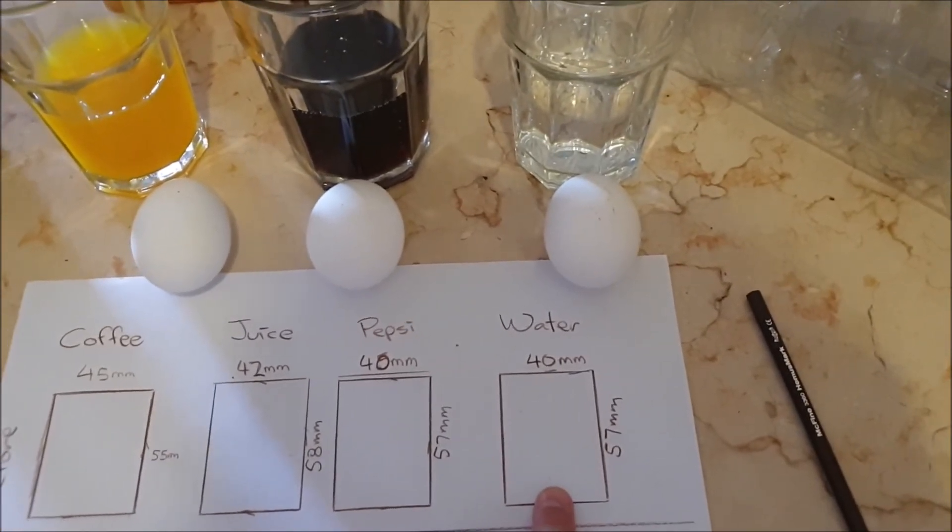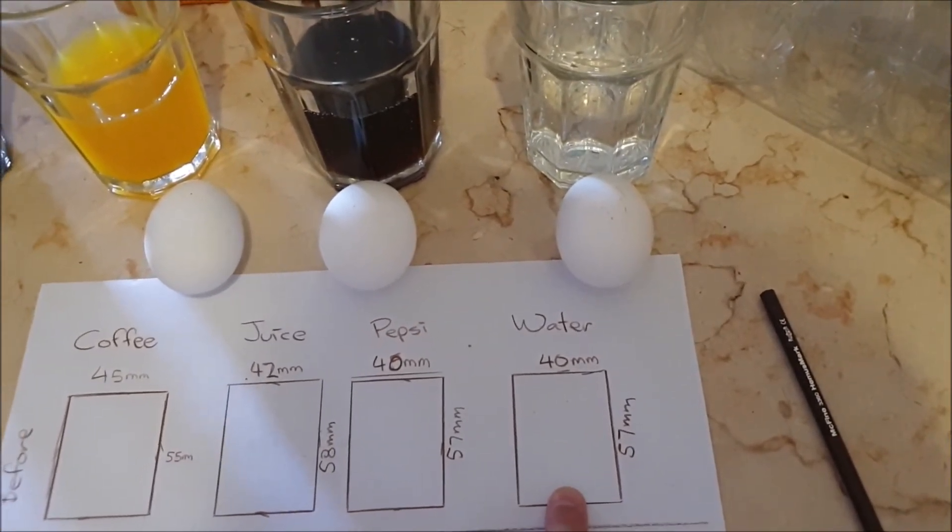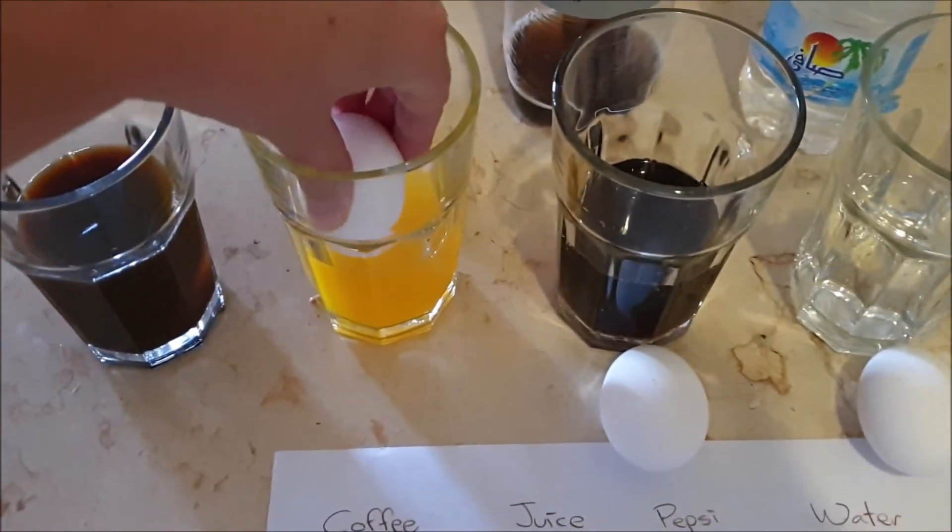The third egg is 40 by 57. And the fourth egg is 40 by 57 as well. So these two are almost exactly the same size egg. So now I'm putting them in the liquid.